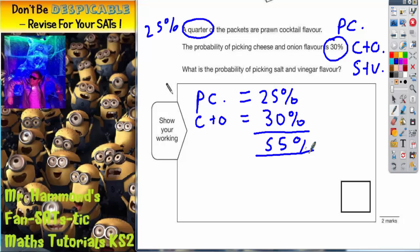So far we've got 55%. Now salt and vinegar must be all the rest that will make it add up to 100%. What do we need to add on to 55% to get it up to 100%, because the total needs to be 100%?